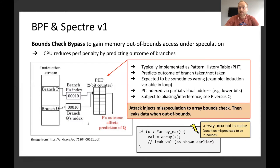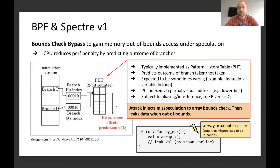This is expected to be sometimes wrong. The index here is typically just a partial virtual address — not a full address — and that can lead to so-called interference. As you can see with the P and Q example, if they both point to the same index, they can mess with each other and affect the CPU's prediction. Attacks in general inject misspeculation for the array bounds check so that they can then access data out of bounds.